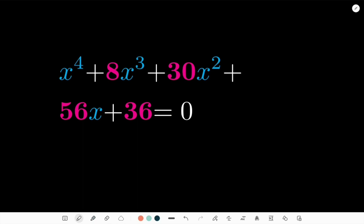So what do we have? We have x^4 + 8x^3 + 30x^2 + 56x + 36 = 0.